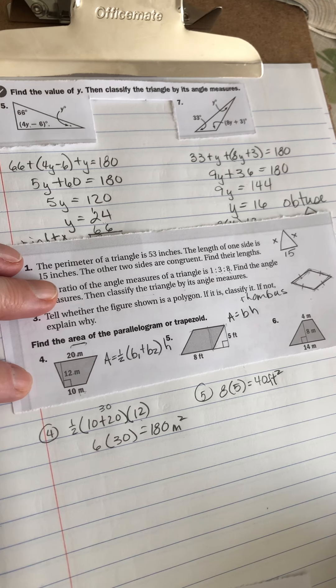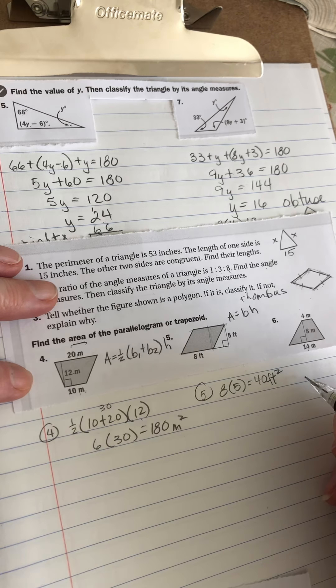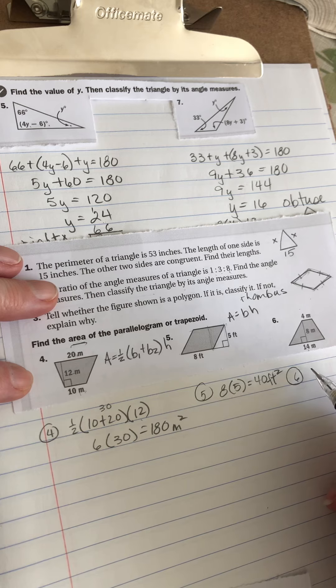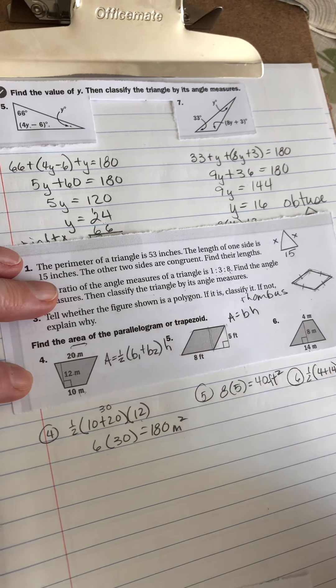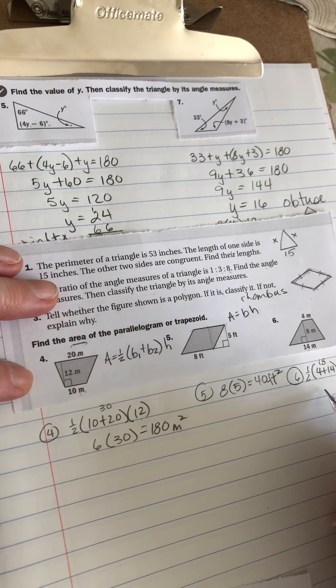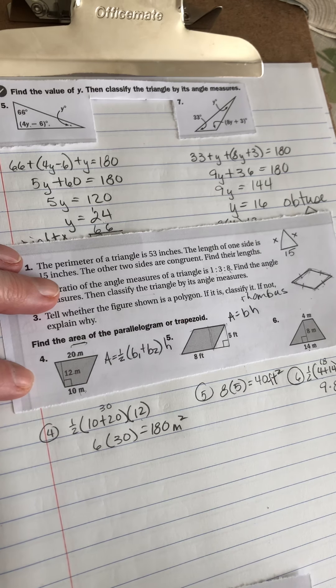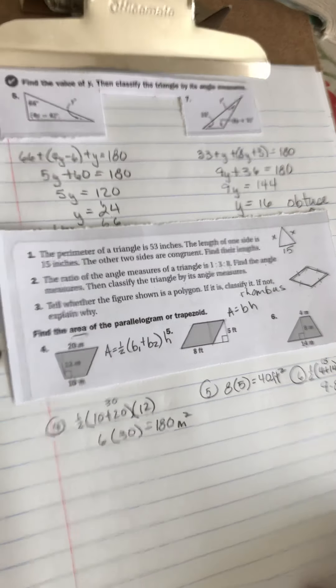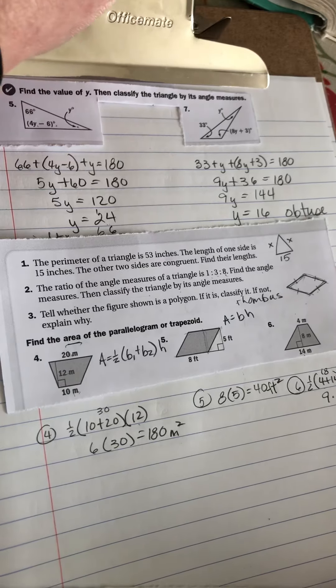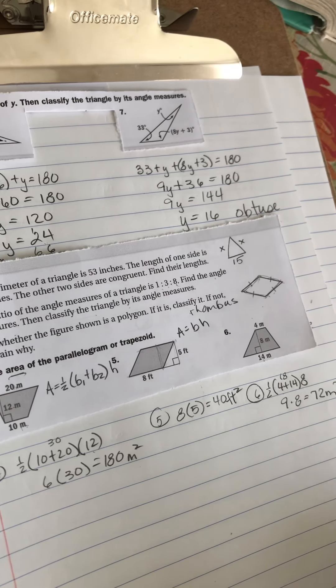Do you want to do another trapezoid? Nine. This is a trapezoid because it gives me two bases. So I know that I'm going to do one half, four plus 14 times eight. Four plus 14 is 18. Half of 18 is nine times eight equals 72 meters squared. Now, if they gave me the area and I was missing a side, that would be an equation to solve. Sorry, you can't see that answer, can you? But you know that nine times eight is 72. There it is. 72 meters squared.